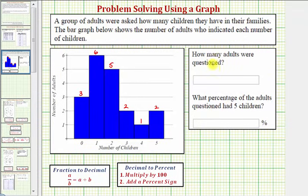We're first asked how many adults were questioned. This would be the sum of the frequencies, which in this case would be three plus six plus five plus two plus one plus two, which equals nineteen. So now we know that nineteen adults were questioned.